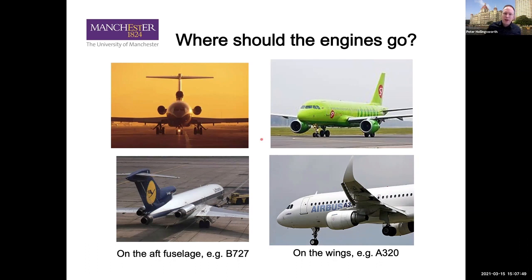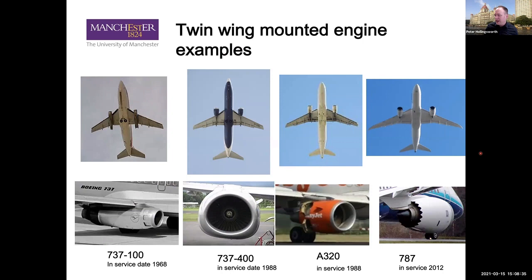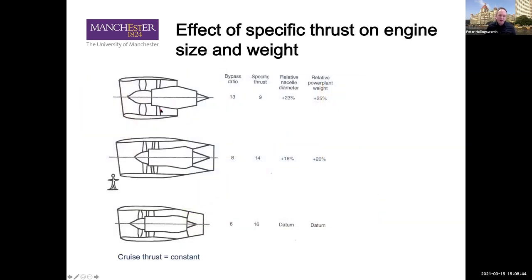Question three: what is the relationship between specific thrust and TSFC — thrust specific fuel consumption? Forty percent answered that as specific thrust decreases, TSFC improves. In general, as specific thrust decreases, we're moving a lot more air at a lower velocity to achieve the same thrust, which means less kinetic energy must be added to that air.